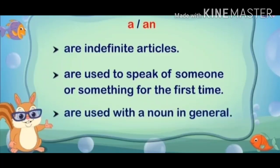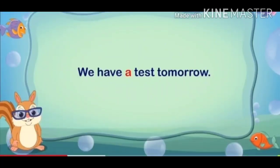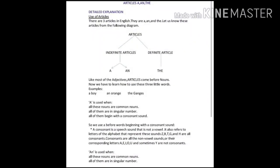Now we will take an example: We have a test tomorrow. Here, A is placed before the word 'test'. AN is used when: all these nouns are common nouns; all of them are in singular number; all of them begin with a vowel sound. So we use AN before words beginning with a vowel sound. Therefore we say: an are, an eagle, etc. Uses of A and AN: we use AN before 'are' and 'honest'.